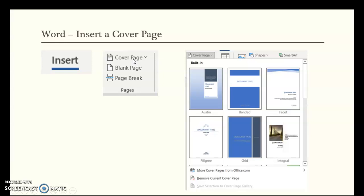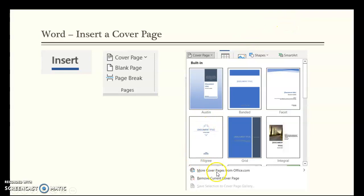Inserting a cover page is simple — go to the Insert tab and select Cover Page. There are about 15 or 16 different styles to choose from, each with placeholders for a main title, subtitle, author, company, and date. Click any placeholder you don't need and just delete it. You can right-click pictures to change them, and change the fill color as well. To remove a cover page, go to Insert, choose Cover Page, and click 'Remove Current Cover Page.'